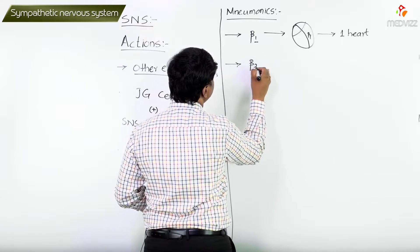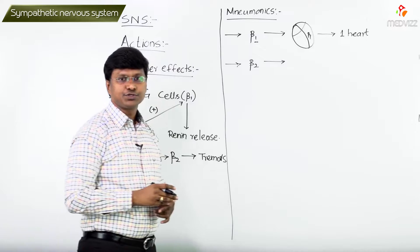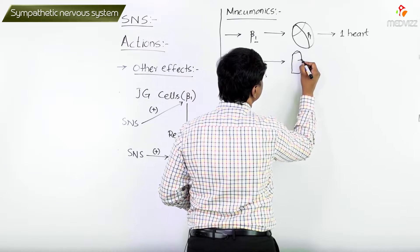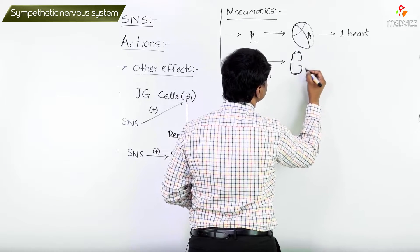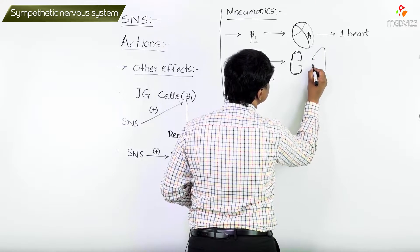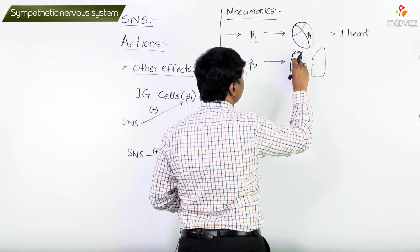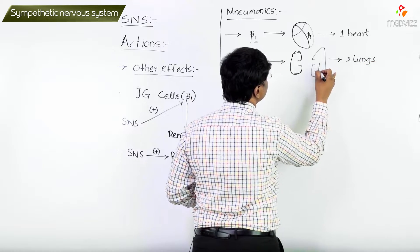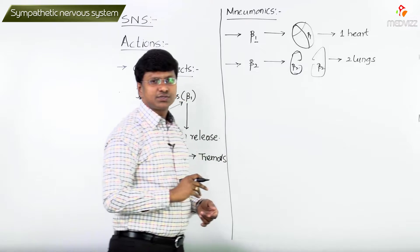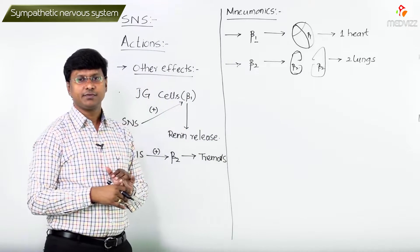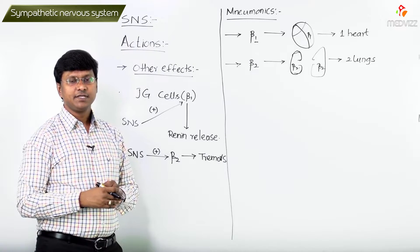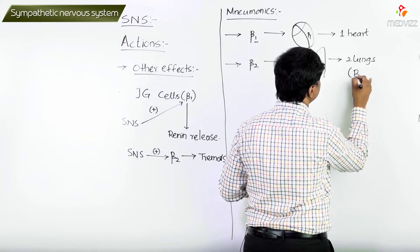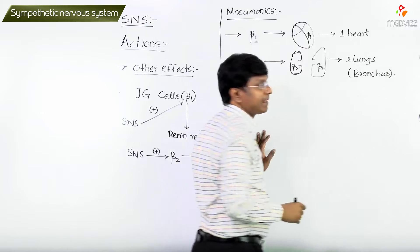Now, the distribution of beta-2 receptors. We have two lungs. So that is why the beta receptors within the lungs are beta-2 receptors. Beta-2 receptors are present within the lungs — mainly within the bronchus. In the bronchus, what we have is the beta-2 receptors.